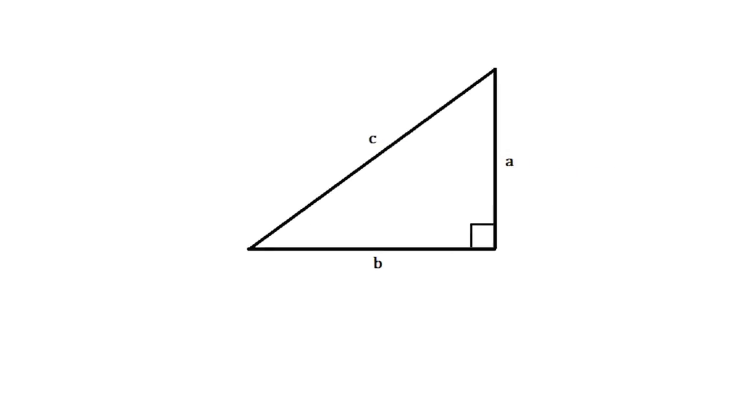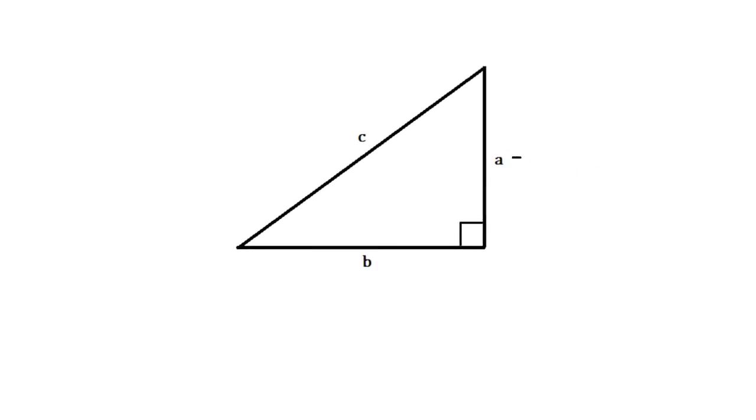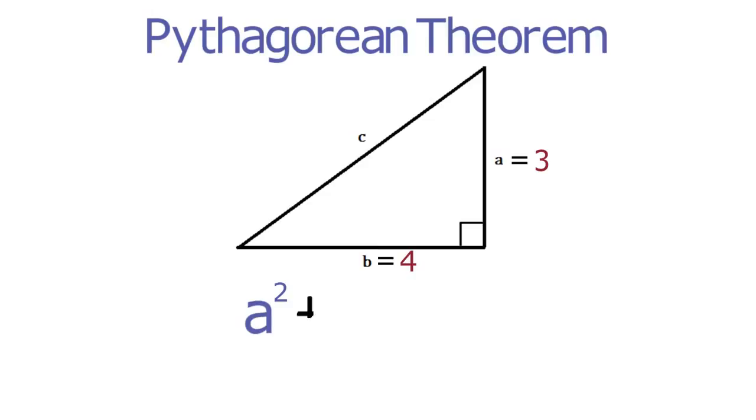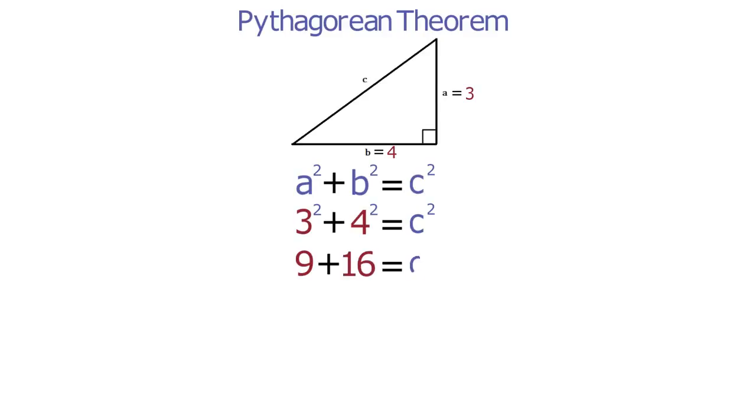For example, suppose a right triangle has two legs of lengths 3 and 4. You can use the Pythagorean theorem to find out the length of the hypotenuse by plugging these two values into the formula as A and B. Now use algebra to solve for C.